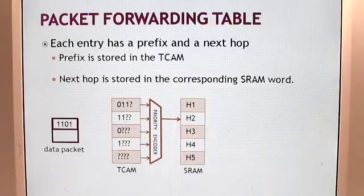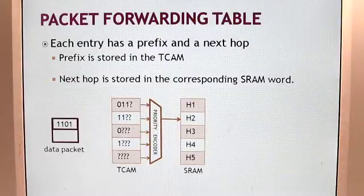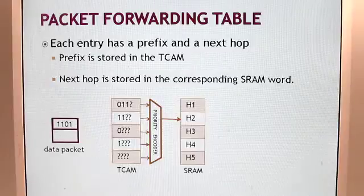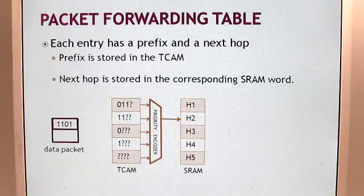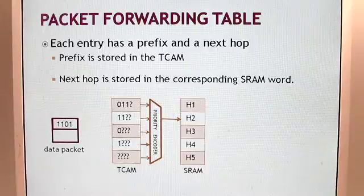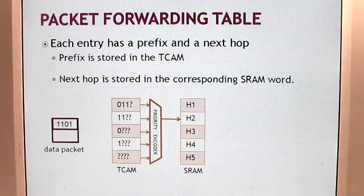A TCAM is used in networking applications such as packet forwarding and classification. Each entry in a packet forwarding table contains a prefix and a next hop. The prefixes are stored in a TCAM and the corresponding next hops are stored in a static random access memory, or SRAM, that is usually associated with a TCAM.